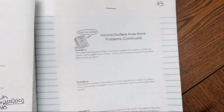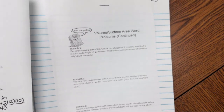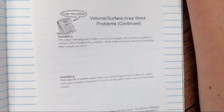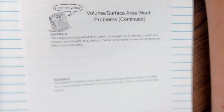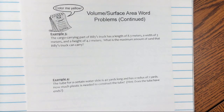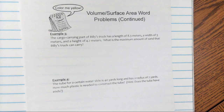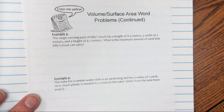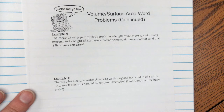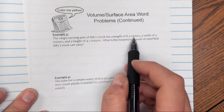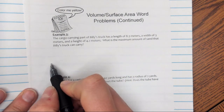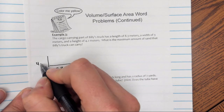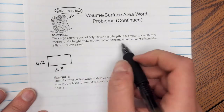Example number three: the cargo-carrying part of Billy's truck has a length of 8.3 meters, a width of 3 meters, and a height of 4.2 meters. What is the maximum amount of sand that Billy's truck can carry? The bed of a pickup truck is close to a rectangular prism. I'm also cued in because it says length, width, and height — those are the measurements given for rectangular prisms. So this truck has a length of 8.3 meters, a height of 4.2 meters, and a width of 3 meters.